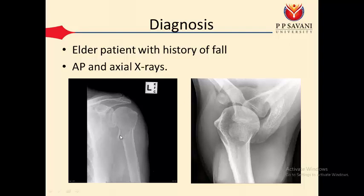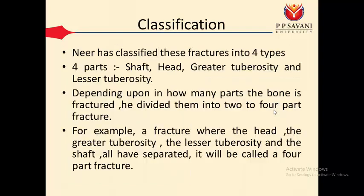To diagnose: an elderly patient with a history of fall, and an X-ray will confirm the diagnosis. As you can see, this is the AP view (anterior-posterior view) of the X-ray, in which you can clearly see the surgical neck of humerus fracture. There is also a special axial X-ray view, which is normally used to diagnose the humeral surgical neck fracture.